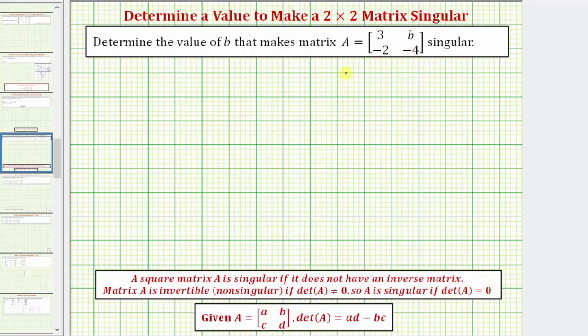So we'll set the determinant of matrix A equal to zero and then solve for b. We'll use vertical bars for the determinant of matrix A. So we have three b, negative two, negative four. And for matrix A to be singular, this must equal zero.